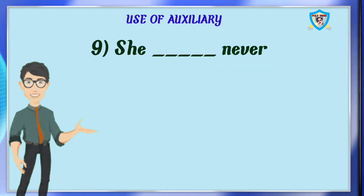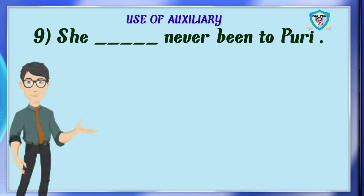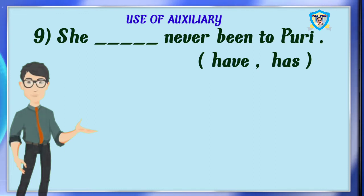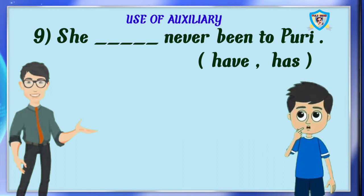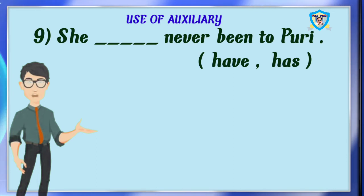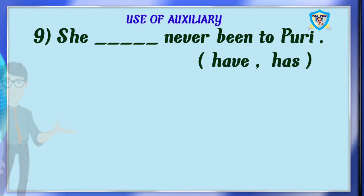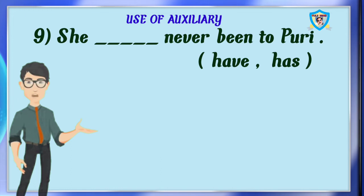Question 9: she dash never been to Puri. Options are have, has. Which is the right answer? It is have. No, it is wrong. Here the subject is she and the sentence is in present perfect, so we have to use has. She has never been to Puri.